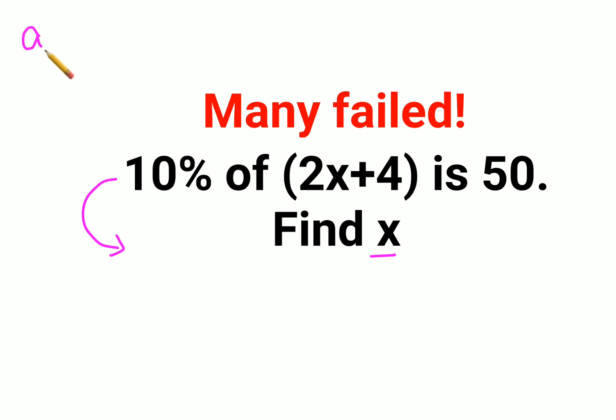Now please understand, whenever you have a percent sign ahead of a number, you can convert into a fraction by dividing that number by 100. So we have 10 percent, so 10 upon 100. Of in mathematics stands for multiplication. We keep the bracket as it is: 2x plus 4. Is means equal to 50.